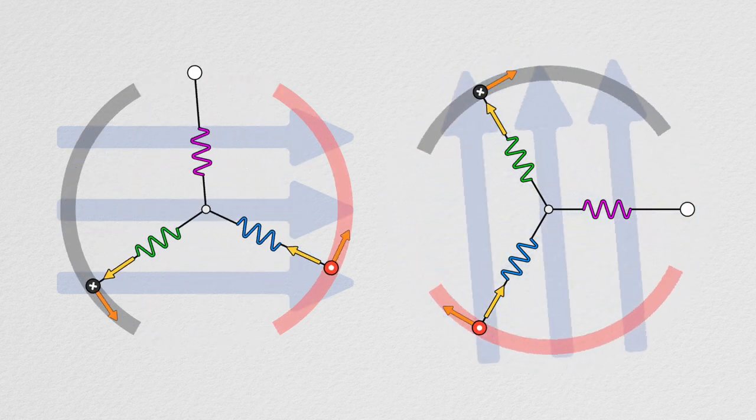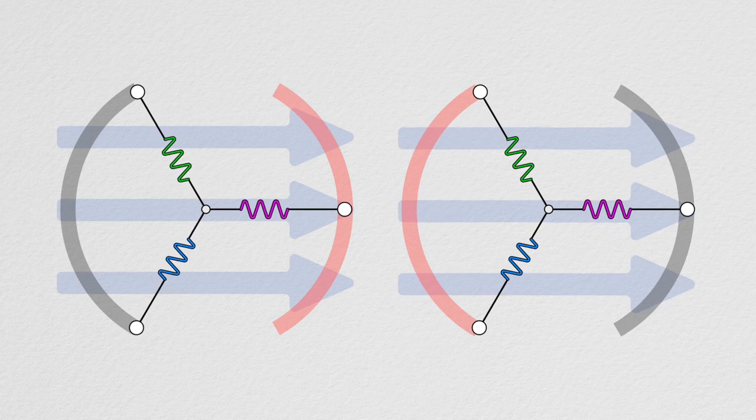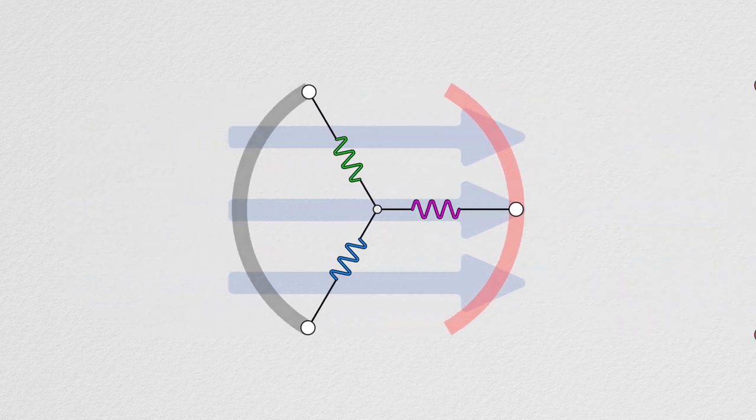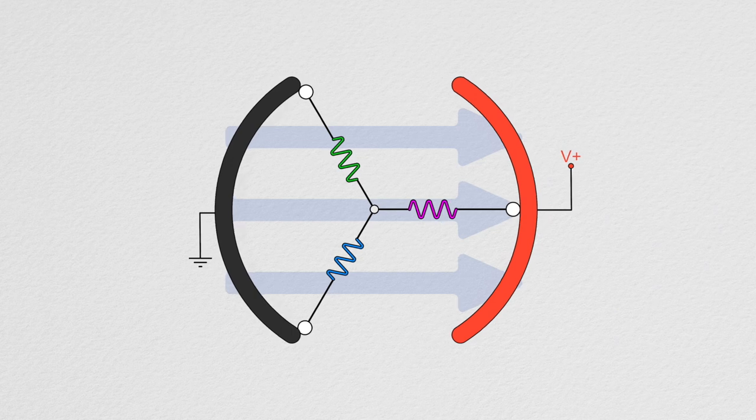Since our magnetic field was static in our brush configuration, the ranges where we needed to connect to high and ground were also static, and we were able to design brushes that took care of our commutation for us. Now however, this isn't practical.